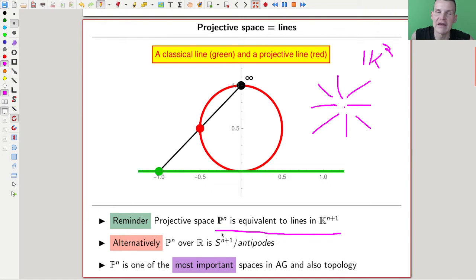Alternatively, the topological approach is: if you identify points on a line anyway, you could just put them on a circle of radius one. But then you still need to identify the antipodal points because the line goes through both points. So you can also realize projective space as a quotient of the sphere, S^1 mod antipodes.